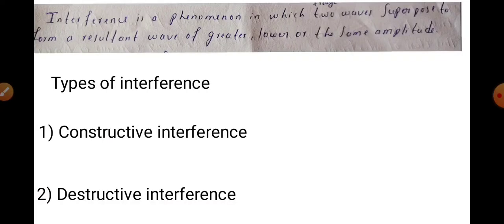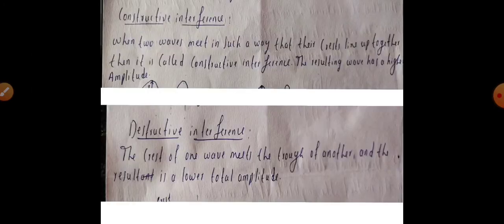Now let us see constructive interference. When two waves meet in such a way that their crests line up together, then it is called constructive interference and the resulting wave has a higher amplitude.